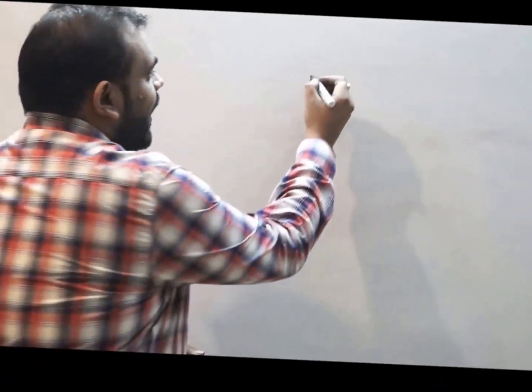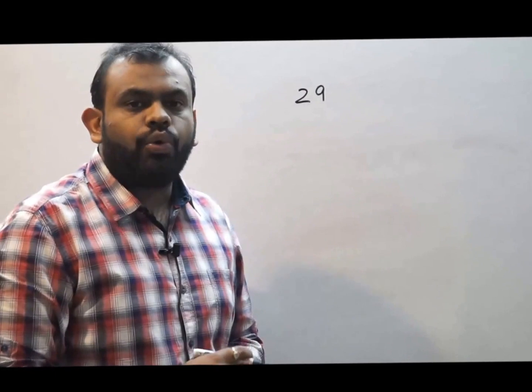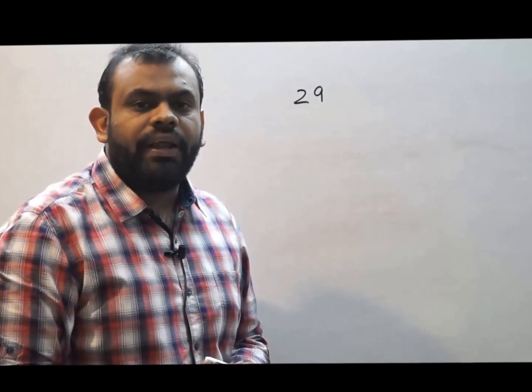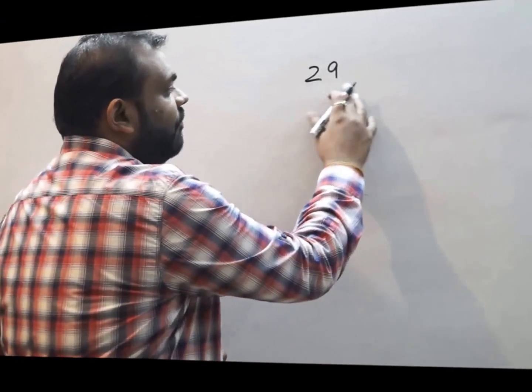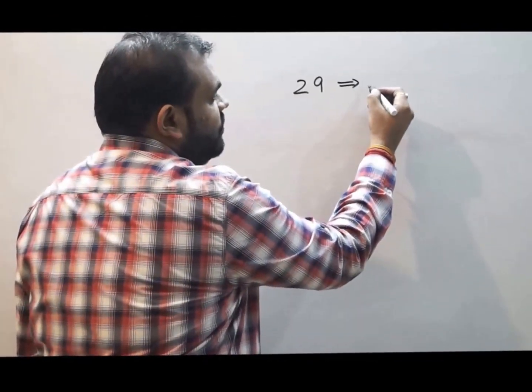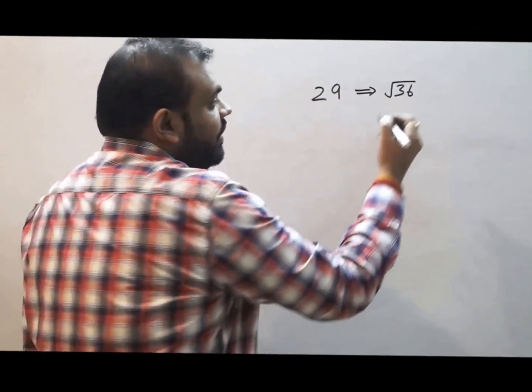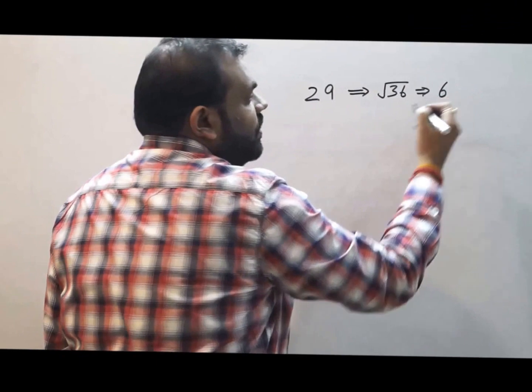Randomly I am taking 29 as the number for which I need to check whether it is prime or not. As 29 is prime we all know that. But how to apply my way of finding whether it is prime or not? Take the perfect square which is larger than this. So the perfect square which is larger than this is 36 and the square root of 36 is 6.